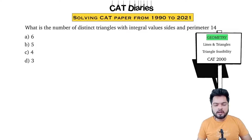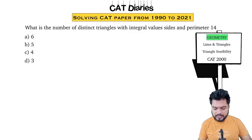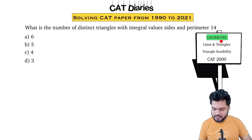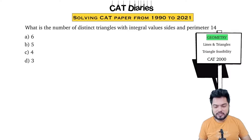Hello everyone and welcome to this class on CAD Diaries. In CAD Diaries we'll be solving CAD problems from the year 1990 to 2021, and in this section we'll be solving problems from geometry. Even in geometry, we'll start with the topic of lines and triangles, and in that we'll start with the type of triangle feasibility.